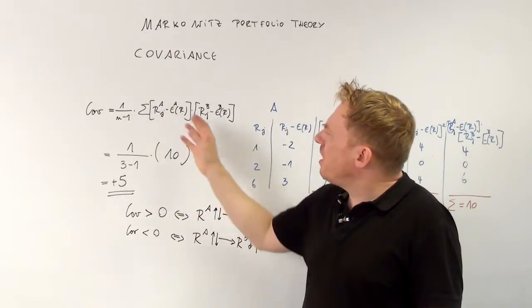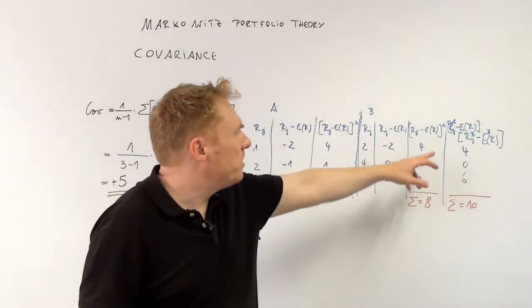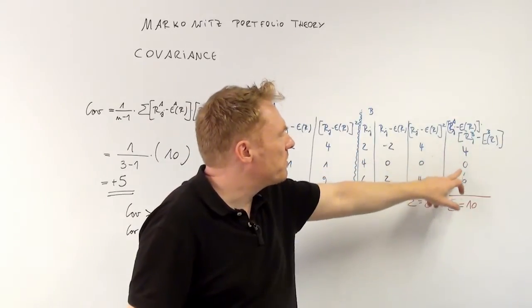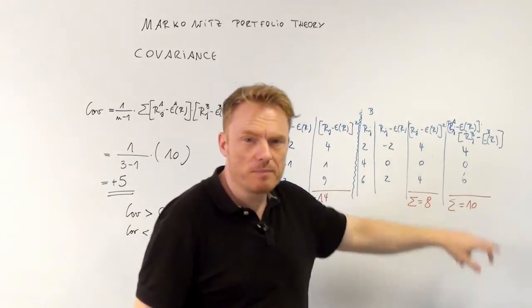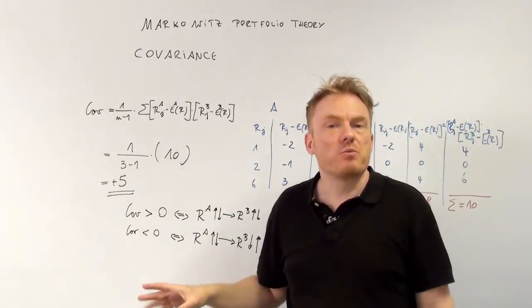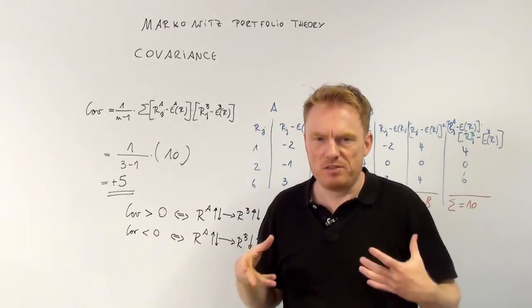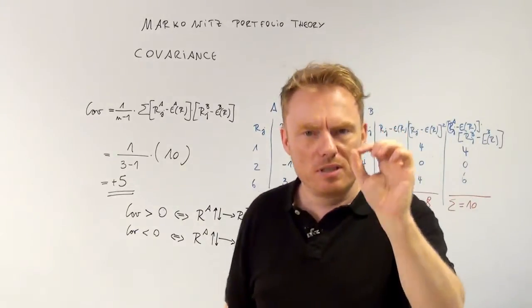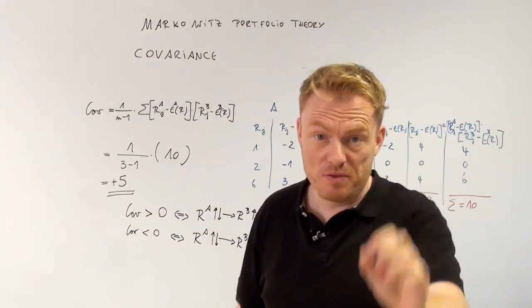Those are the products of the deviations and we need to sum them up. 4 plus 0 plus 6 is equal to 10. Giving us 10 divided by 3 minus 1. 10 divided by 2 is equal to 5. Is equal to, very important, plus 5.